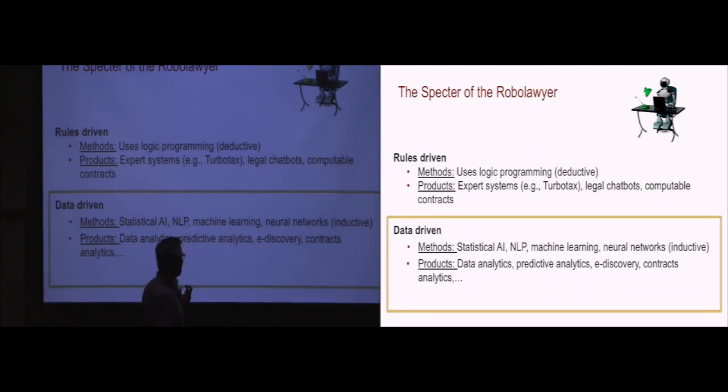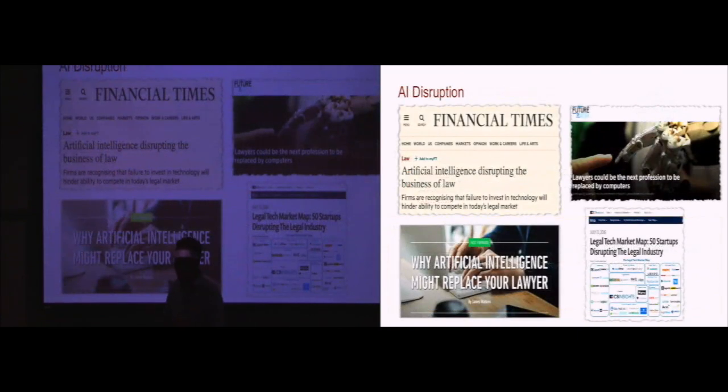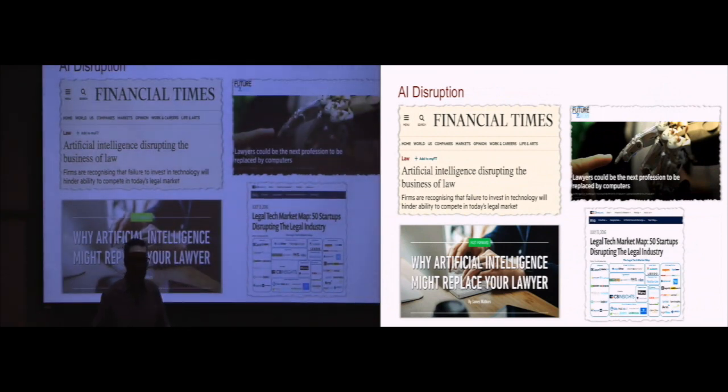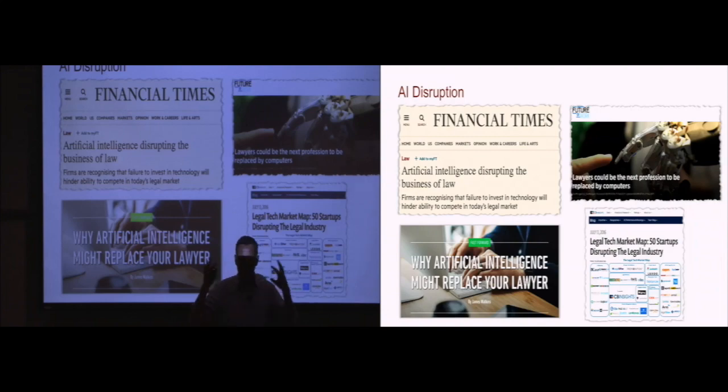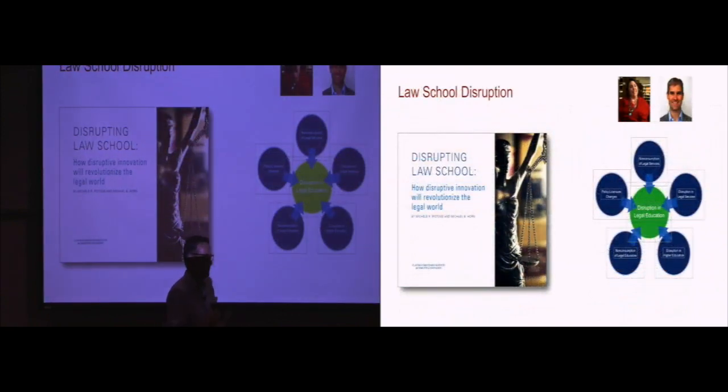It's the latter ones that from traditional attorneys' point of view seem somewhat more threatening, as they typically view the ability to predict legal outcomes as something associated with their own experience as lawyers and that machines won't be able to do. So AI disruption a few years ago has been all over the media. Now I feel like it has been dehyped. But this concept of the robo-lawyer was much written about. There's been also some writings about how law schools would be disrupted through digital transformation.